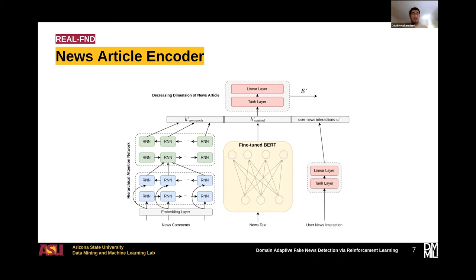First, here I show you the news article encoder. The goal of this component is to take all the news as input and generate a news representation. It has three parts. The first part is BERT, which takes the news text as input and generates a text representation. The next part is a hierarchical attention network that takes news comments as input and generates the comments representation. Finally, we have the user-news interaction component that takes a binary vector indicating which users interacted with the news and generates the user-news interaction representation. We then combine these three representations and pass them through a feedforward network to reduce the dimensionality, producing the final news article representation, E prime. This representation can be used to train a fake news classifier.